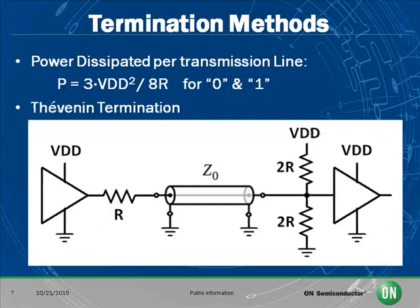In the Thevenin termination method, the power consumed is 3 times VDD squared over 8R, for both a 0 and a 1. So the amount of power is continuous, regardless of what the logic level is.